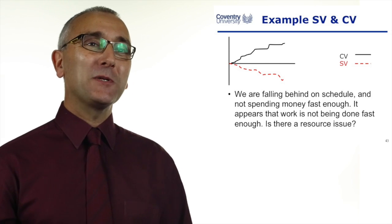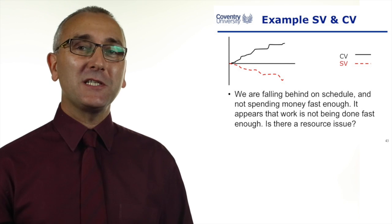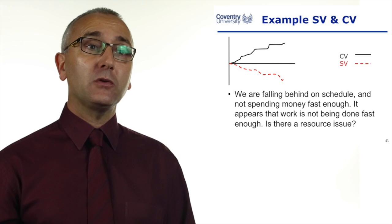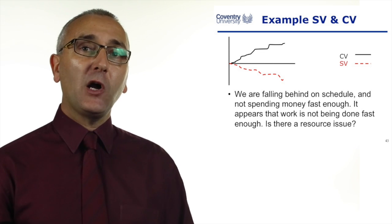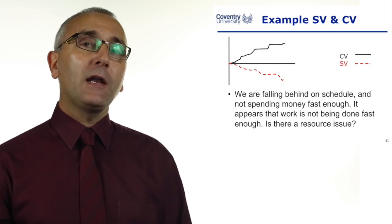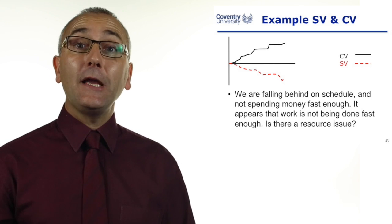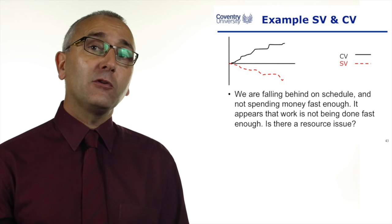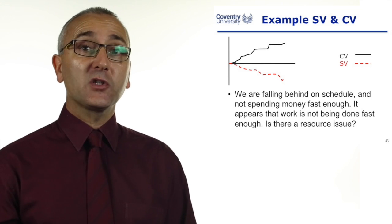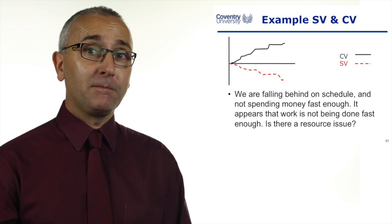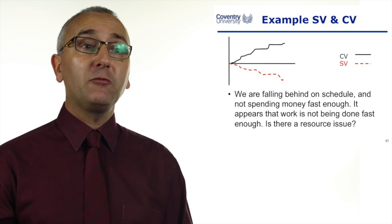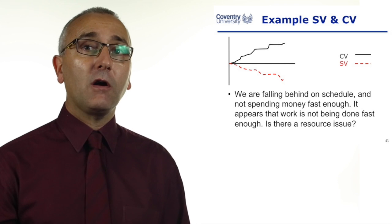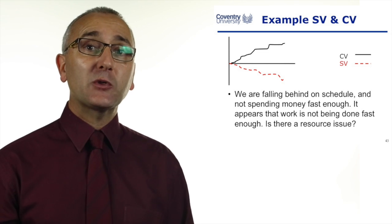In this example it's the opposite. The cost variance is positive, the schedule variance is negative. We're falling behind on the schedule, but we're not spending money fast enough — we're underspent. If you see this happen on a project, it could be an indication that the resources are the issue. If the resources aren't available, they're not doing the work, and if they're not doing the work, they're not spending the money. This pattern in your cost and schedule variance graph could indicate a resource issue.